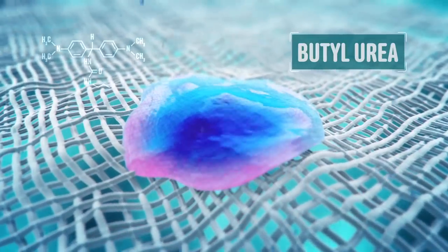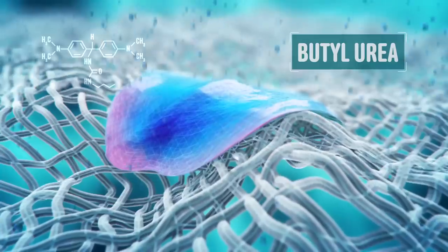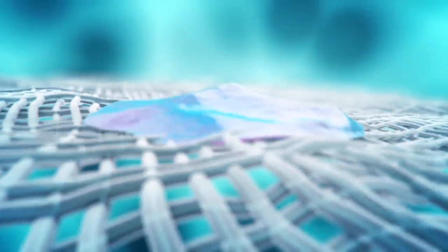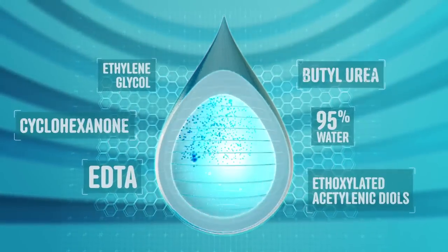Butylurea slows down the shrinkage that happens when moisture evaporates from cellulose fibers, which would otherwise cause the paper to warp and wrinkle. That's a lot packed into every drop.